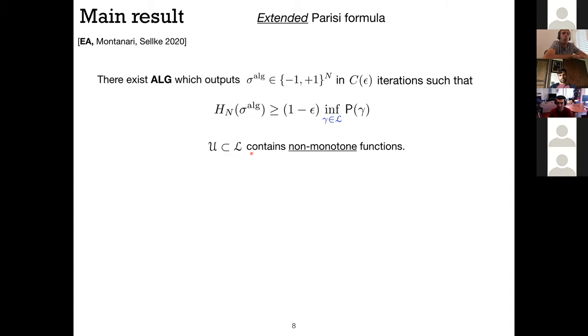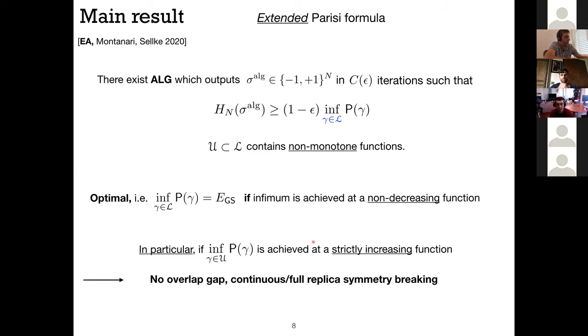Okay, so this algorithm is of course optimal if when you compare this infimum with the other one, then they're equal. So in particular, if this infimum is equal to the ground state energy, if the infimum is achieved at a non-decreasing function, and in particular if this original ground state energy which is optimized over U is achieved at a strictly increasing function, then you get that this algorithm is optimal. So this is called the no overlap gap. That's the definition of an overlap gap per full continuous replica symmetry breaking.